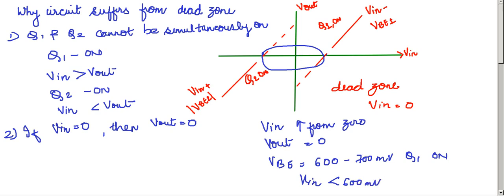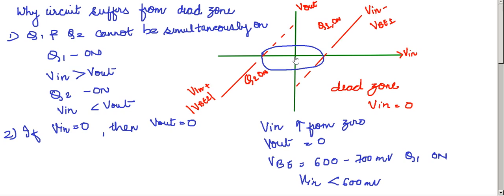Hence, if VIN was initially equal to zero—here we can see that VIN was initially equal to zero—now if VIN is increasing in its positive side, and to make the transistor Q1 ON, the value of VIN must be approximately equal to 600 millivolts such that Q1 gets ON. Hence the output VOUT is exhibiting a dead zone if VIN is less than 600 millivolts.